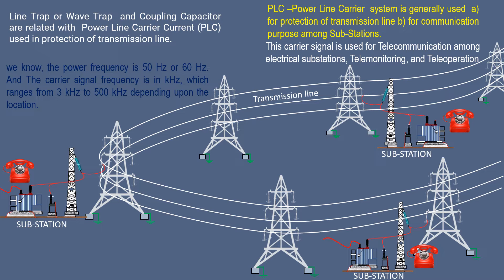The power frequency is 50 Hz or 60 Hz, and the carrier signal frequency is in kilohertz, which ranges from 3 kHz to 500 kHz depending upon the location.